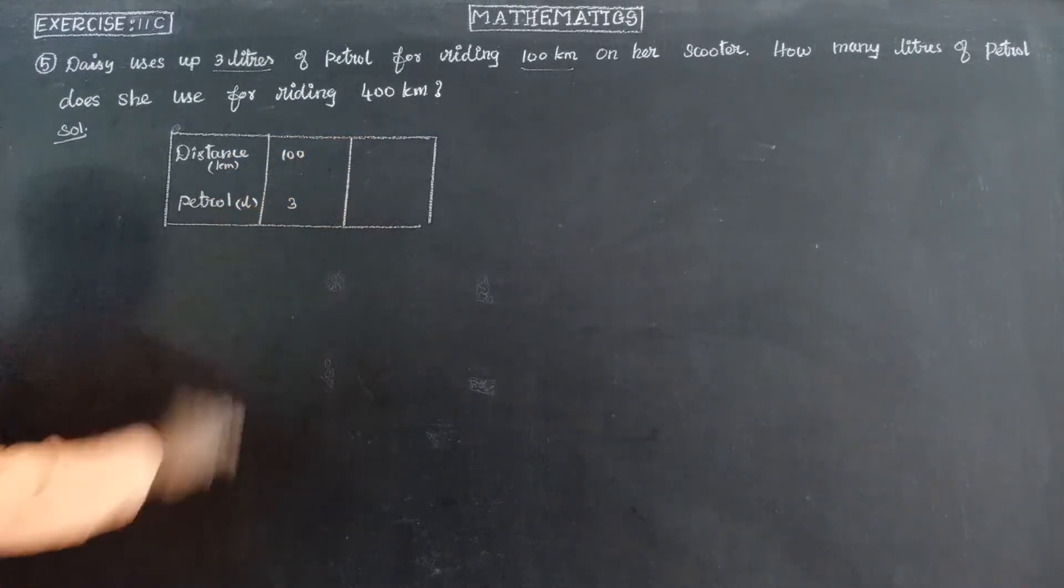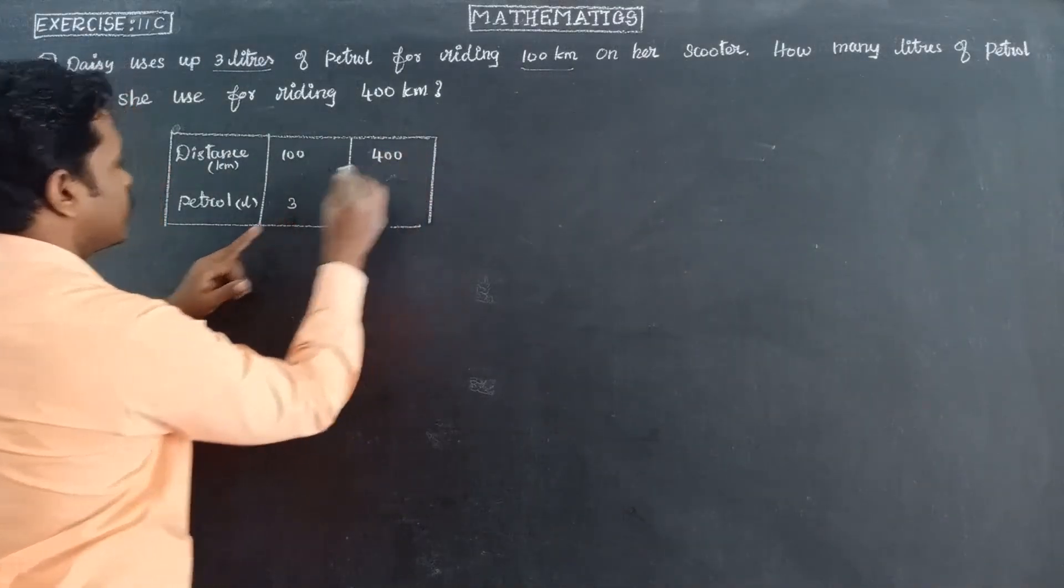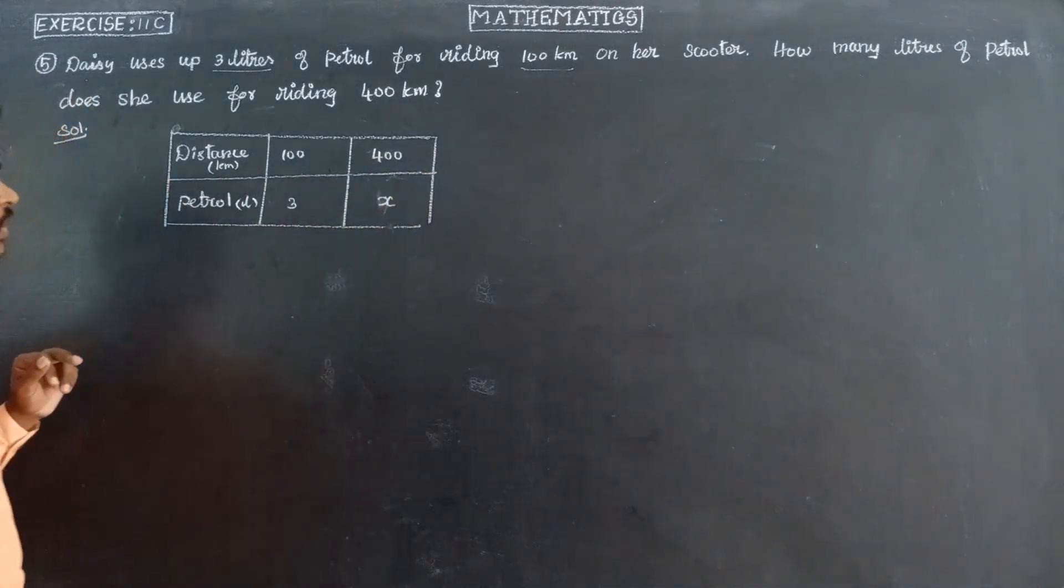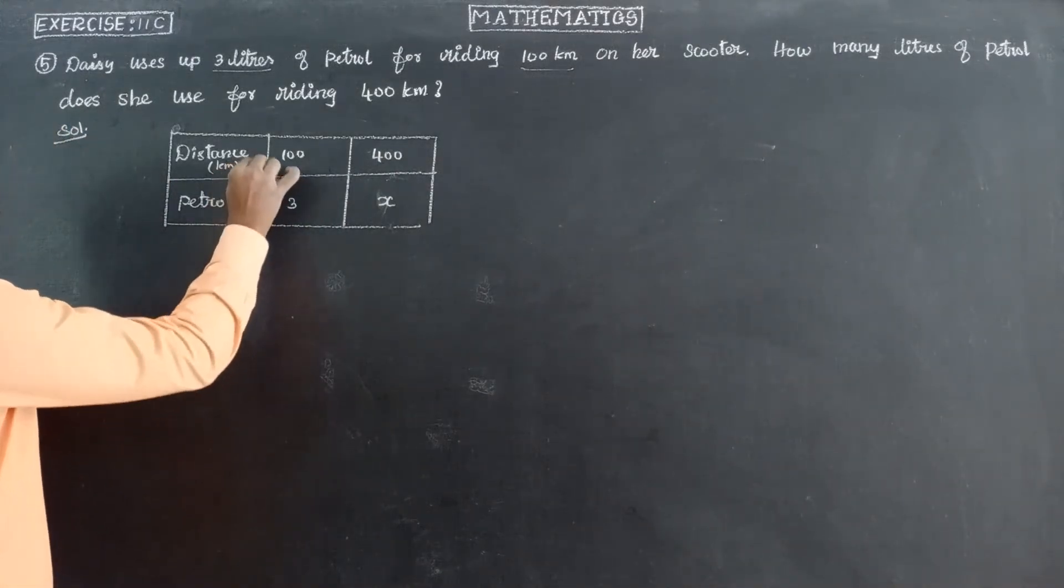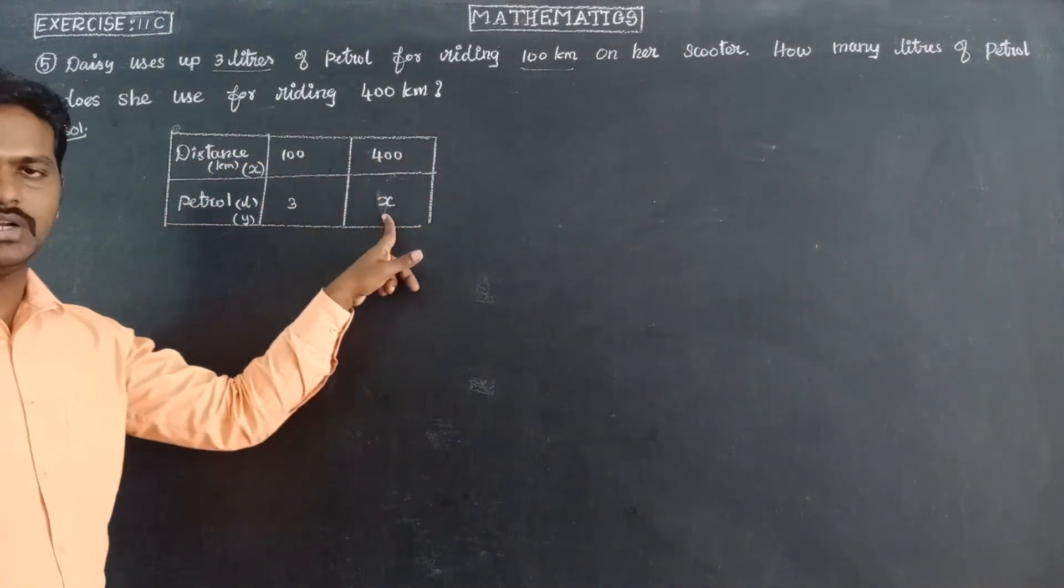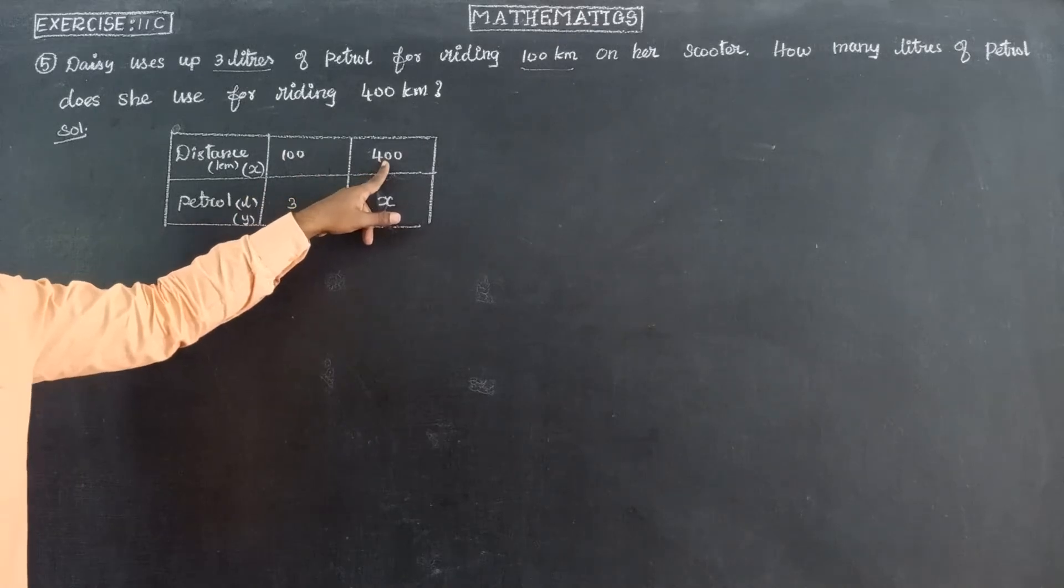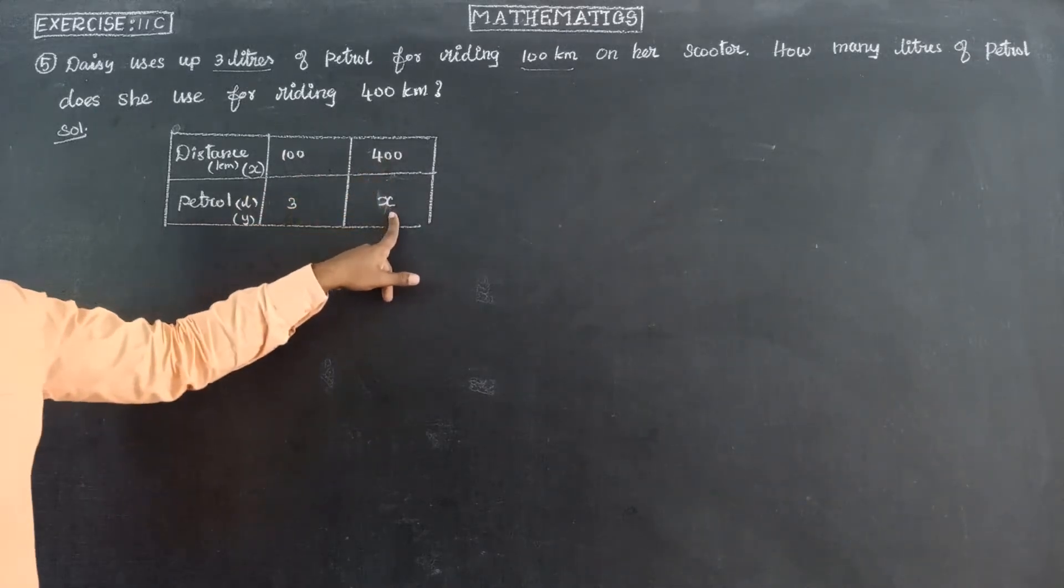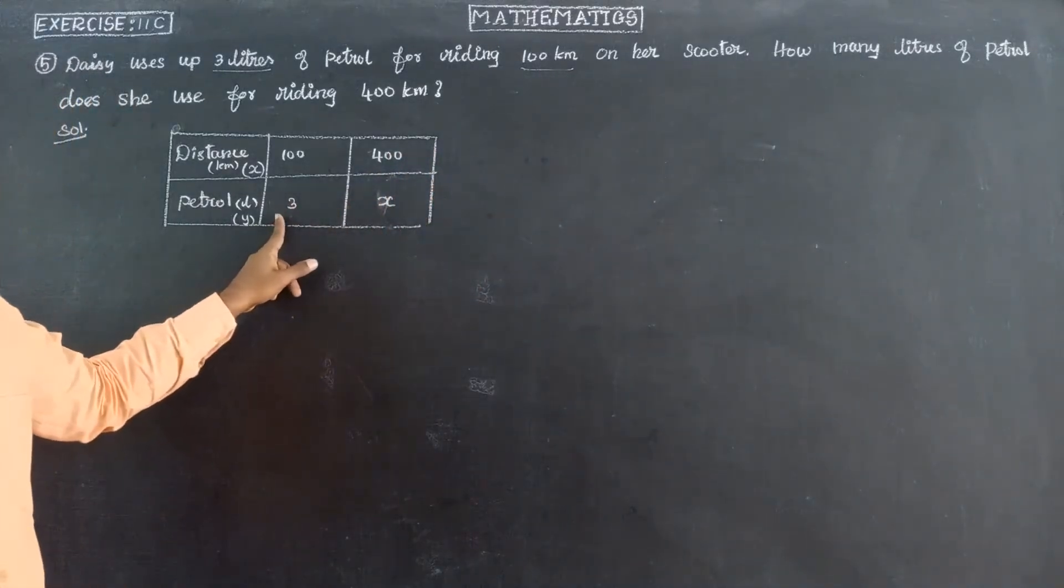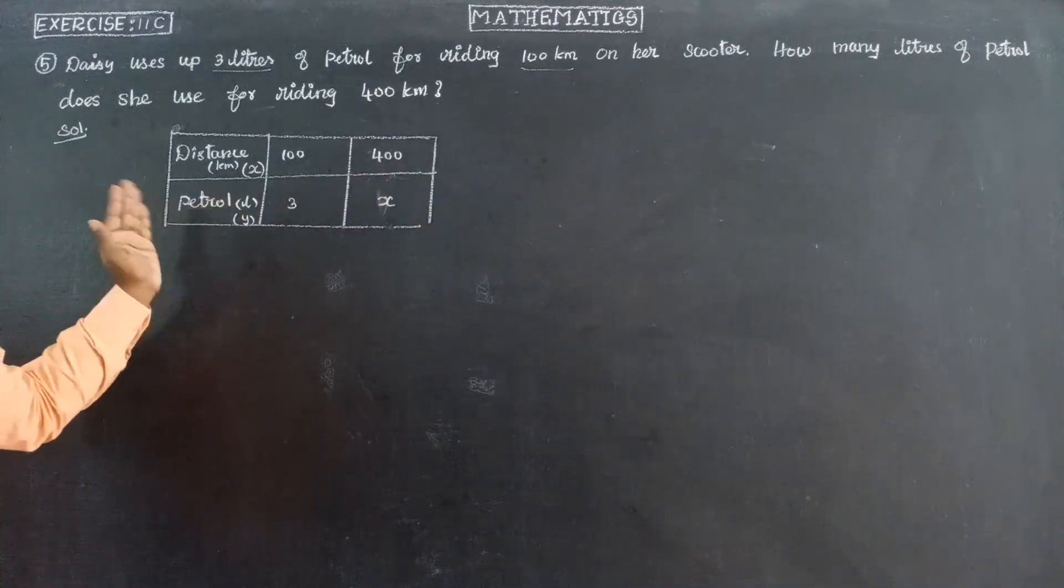So distance of riding 100 km travel. Second point, if distance is increased, petrol would be a necessity. So comparison: first one, 100 km travel requires 3 liters. If you want 400 km travel, more is needed. So distance increases, petrol liters quantity increases. Distance increases at the same time, petrol increases.